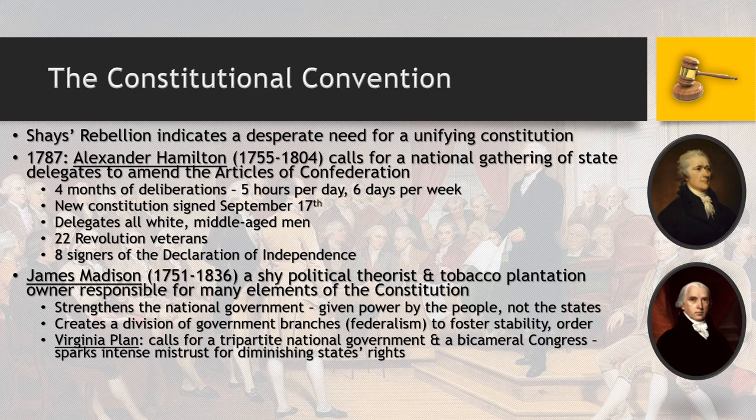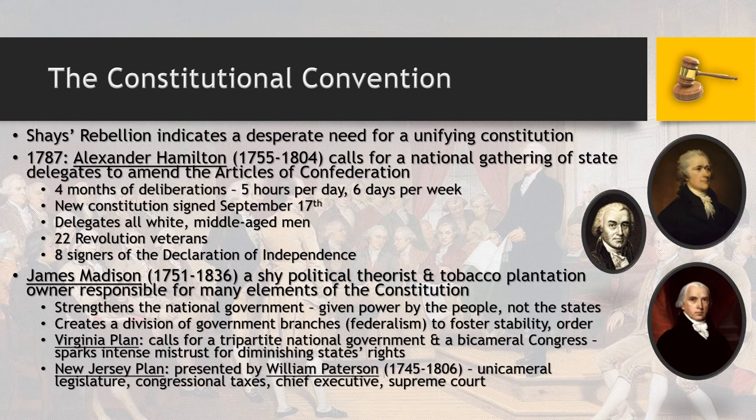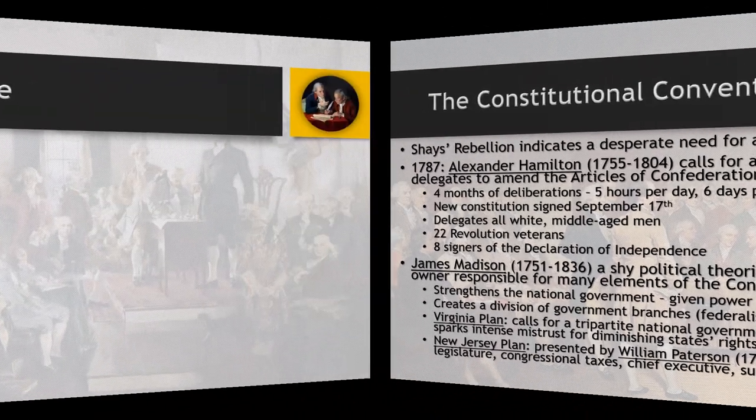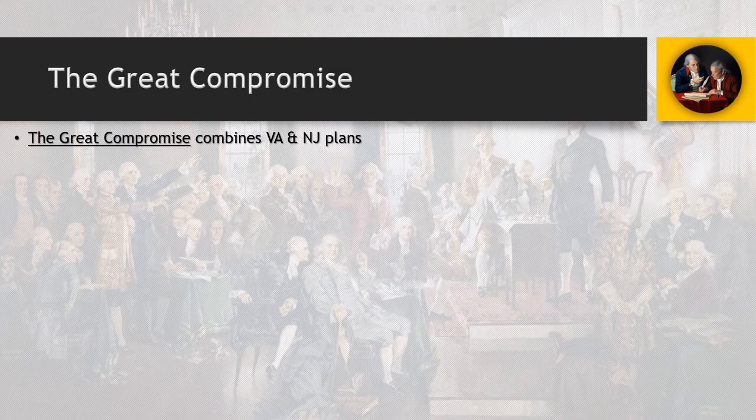Two plans are conceived. The Virginia Plan calls for a tripartite national government with three branches and a bicameral Congress — two houses. Immediately people say this diminishes states' rights and is too federalist — too big a government. The New Jersey Plan, thought up by William Patterson, calls for a unicameral legislature, congressional taxes, a chief executive, and a Supreme Court. Much of this ends up getting adopted. Ultimately, we get the Great Compromise — a combination of both plans — which becomes the basis for the national government we have today.